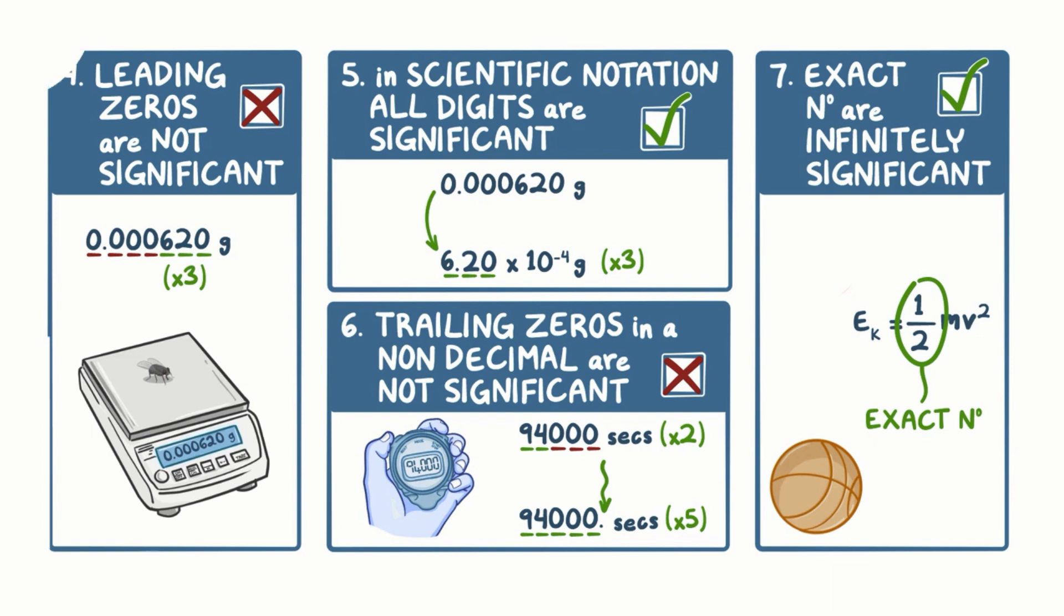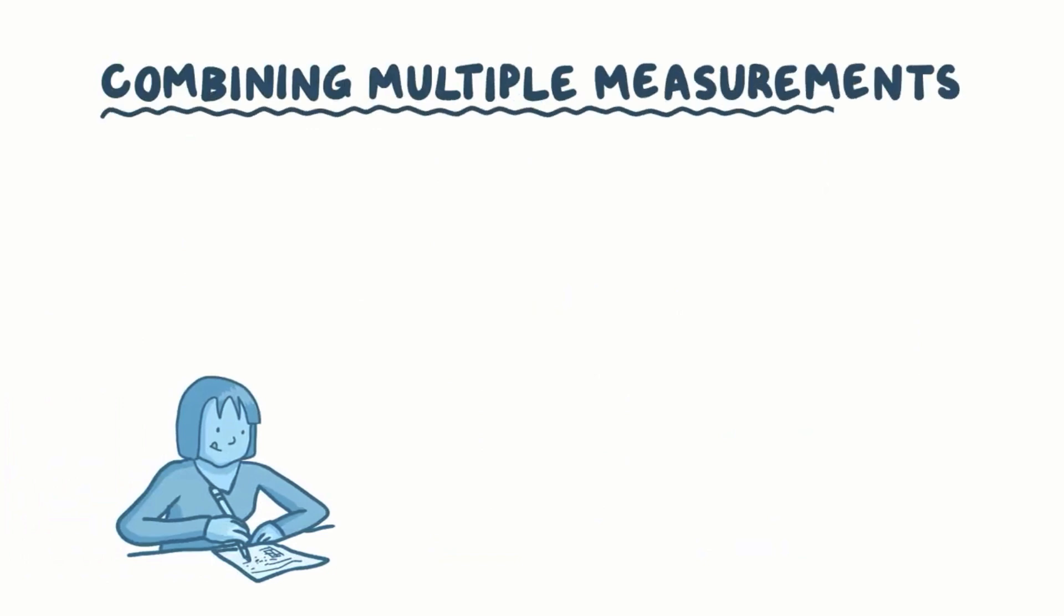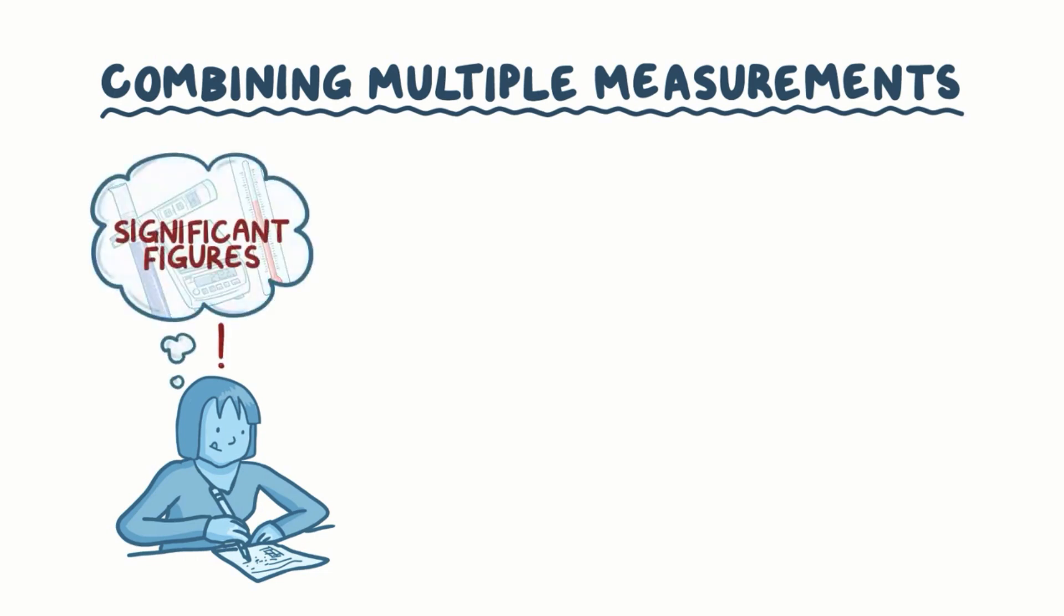It's important to keep track of significant figures when performing calculations that involve combining multiple measurements. This ensures that your final answer doesn't appear to be more or less precise than any of the measurements that went into it. You can use significant figures in calculations by remembering a few more rules.